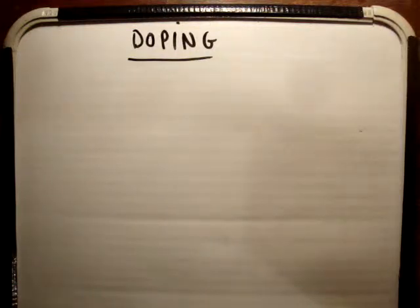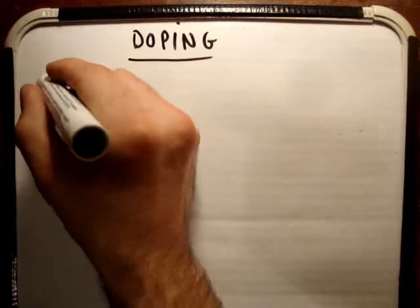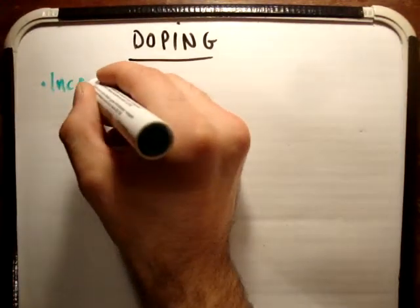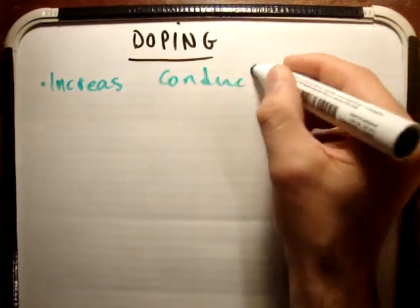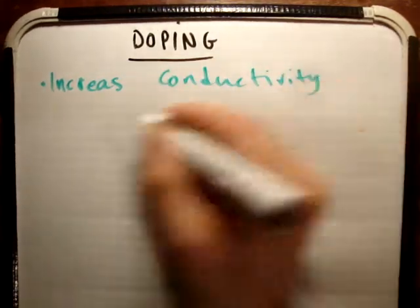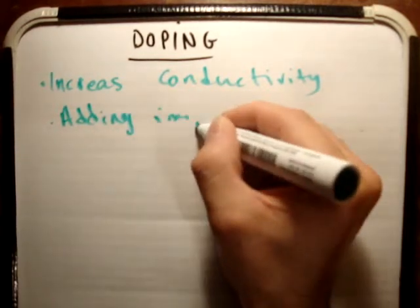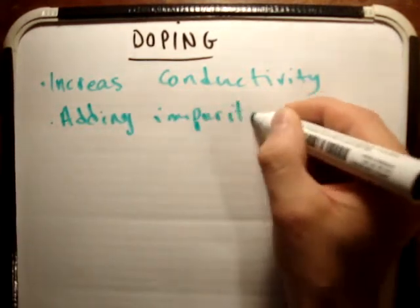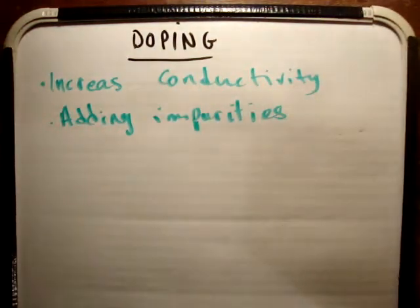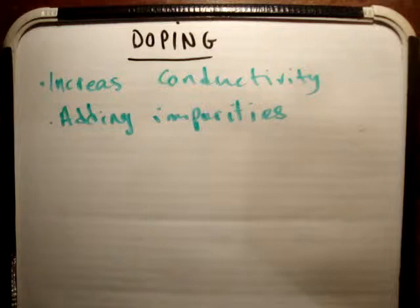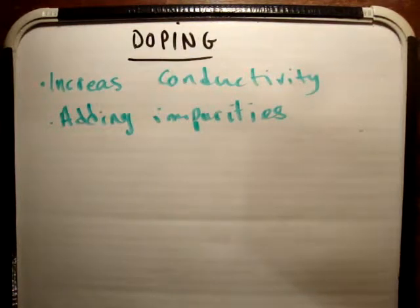I'm assuming a reasonable knowledge here. Doping is the process of increasing conductivity by adding impurities to a substance. When I say impurities, we're talking about other materials.